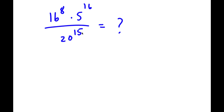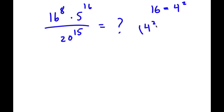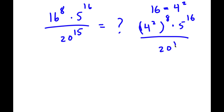So now what I'm going to do is I'm going to start by simplifying 16 to the power of 8. Now 16 is the same thing as 4 squared. So now I'm going to replace 16 with 4 squared. So now I have 4 squared to the power of 8 times 5 to the power of 16 divided by 20 to the power of 15.